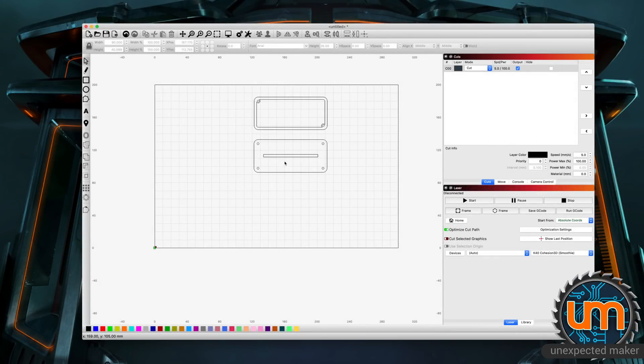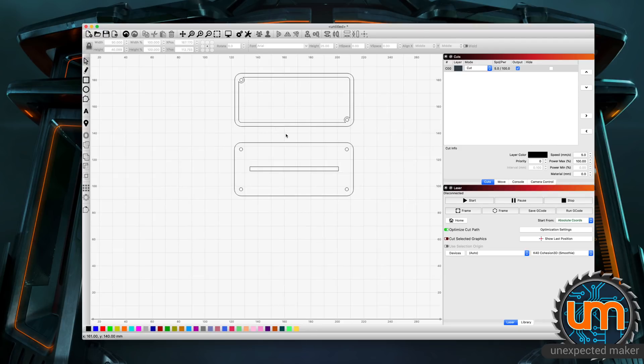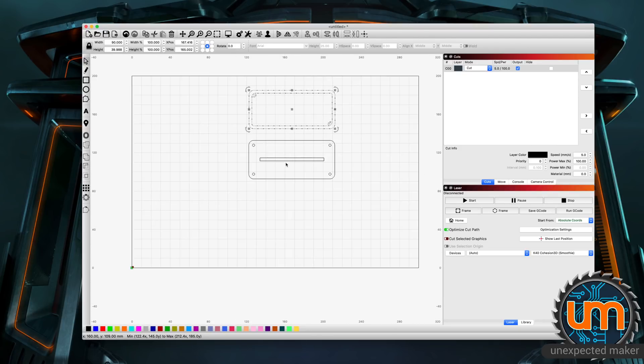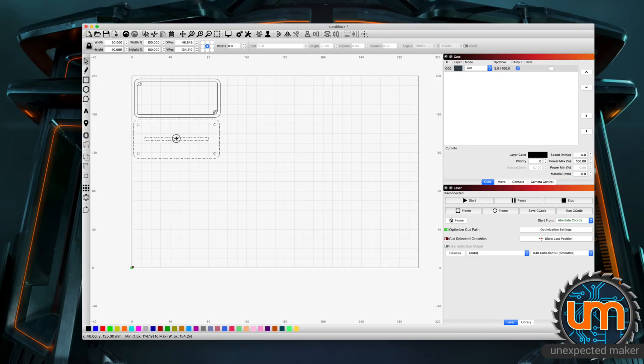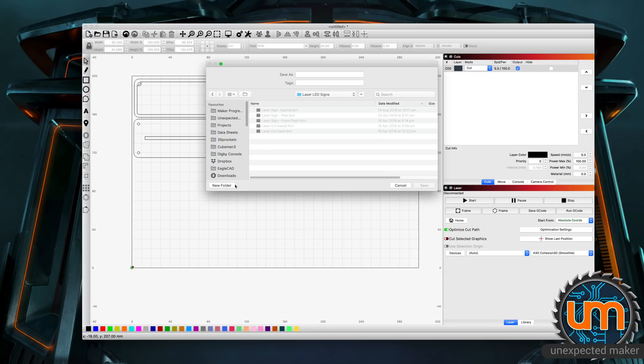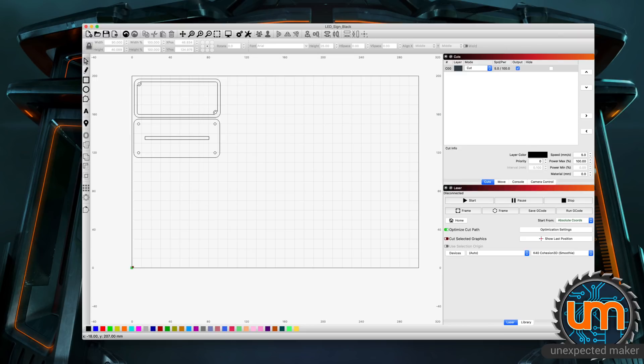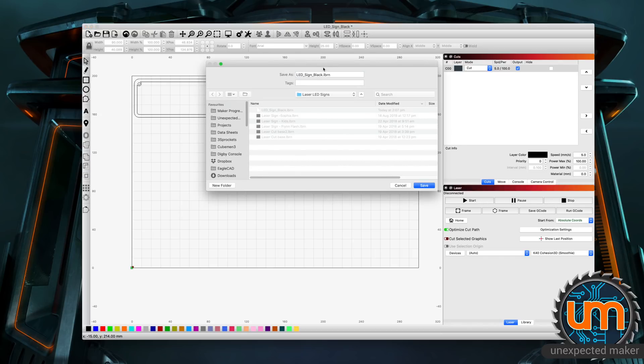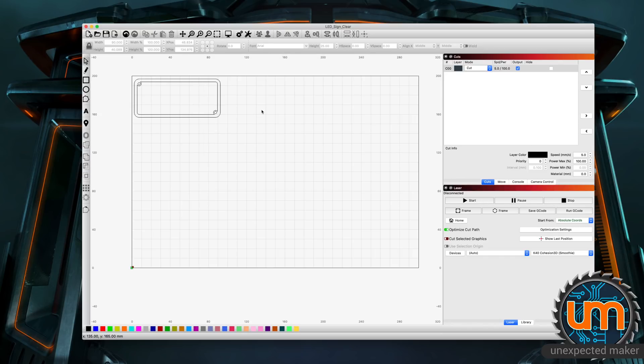This is Lightburn, my laser cutting software. I've imported my two DXFs in here. I've got the ring and I've got the top. I'm going to place these just at the top left corner. It's set up for an A4 sheet because my laser cutter can fit an A4 sheet only. So I want one ring and one top, that's going to be out of black. I'm going to save this as LED sign black. Then I'm going to remove the top and just have this one in there, and call that clear. Let's go and cut this on the laser cutter.